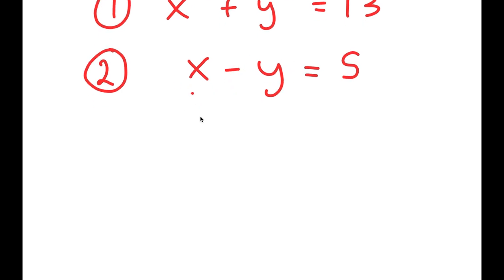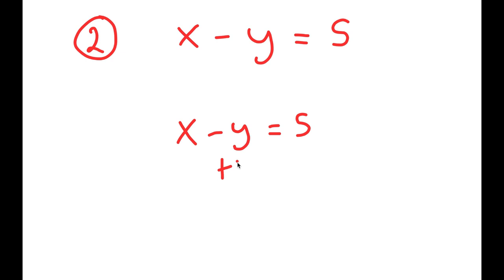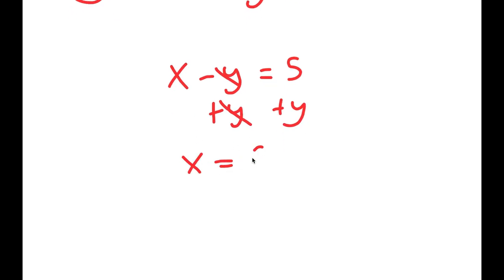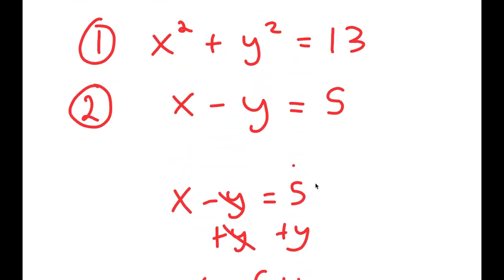To solve this, I'm going to first use my second equation, x minus y equals 5, and solve for one of the variables. I'm going to add y on both sides, solving for x, so I get x is equal to 5 plus y.